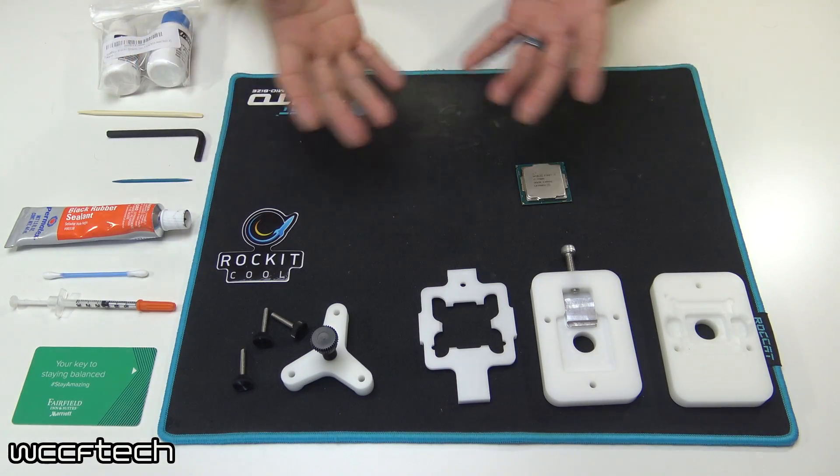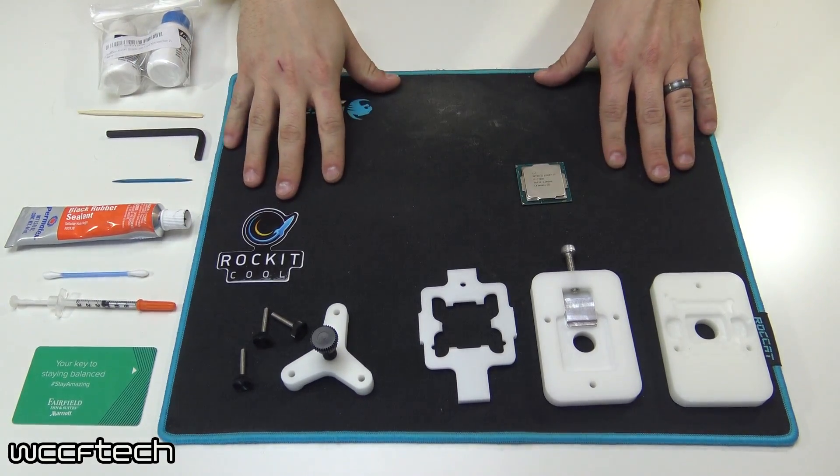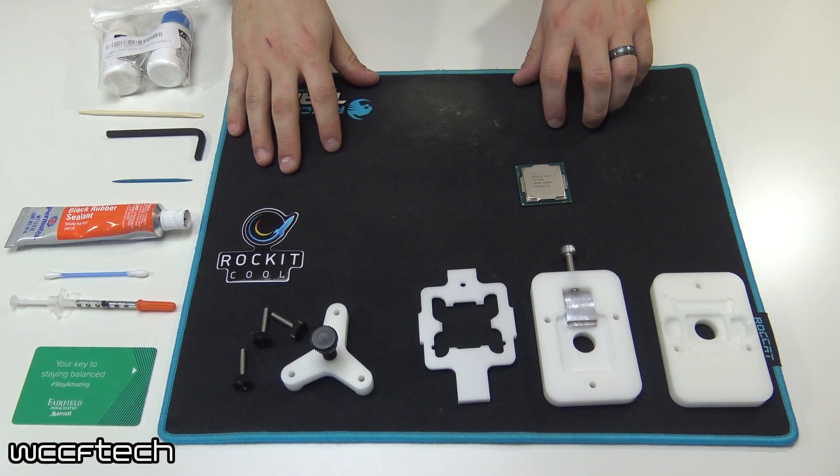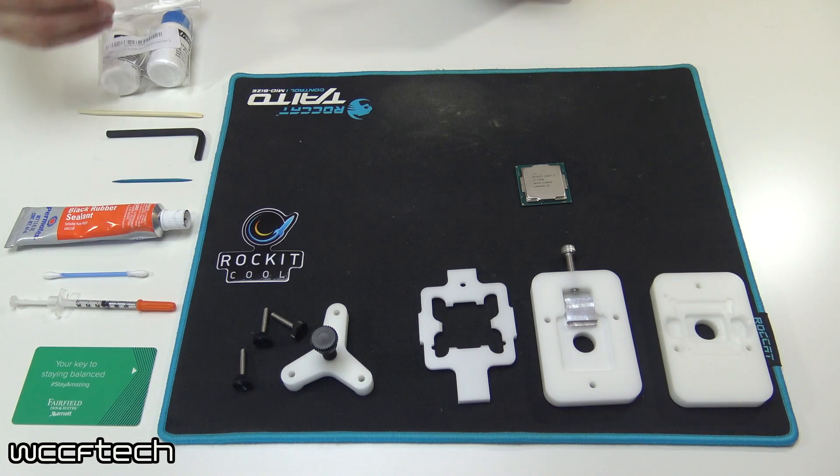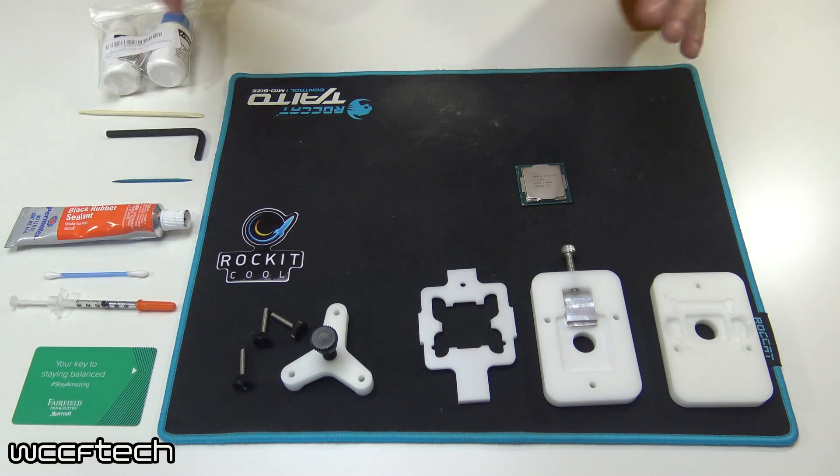Welcome back to the channel everyone. Today here you can see we've got laid out in front of us an Intel Core i7 7700K and the Rocket Cool Delid Kit as well as everything that we need to reapply the IHS.